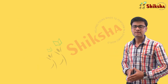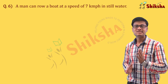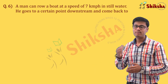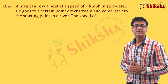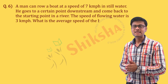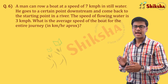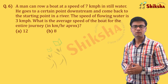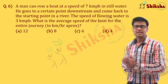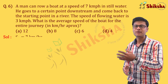Next question: A man can row a boat at a speed of 7 km per hour in still water. He goes to a certain point downstream and comes back to the starting point in a river. The speed of the flowing water is 3 km per hour. What is the average speed of the boat for the entire journey in km per hour (approx)? Options: A 12, B 8, C 6, or D 4.